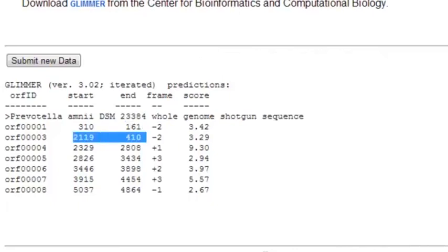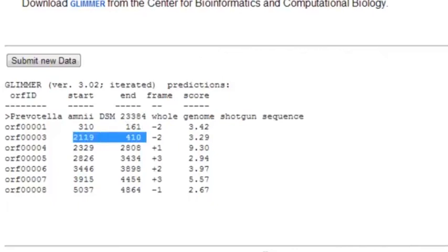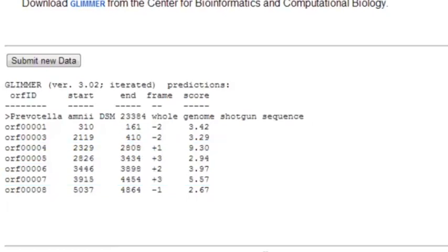And then the open reading frame 3 is 2119 to 410, and then the next four genes are all plus strand genes. The numbers go up, 2329 to 2808. And then the final open reading frame, ORF 00008, is on the complementary strand, so it has predicted seven coding regions from this particular DNA.